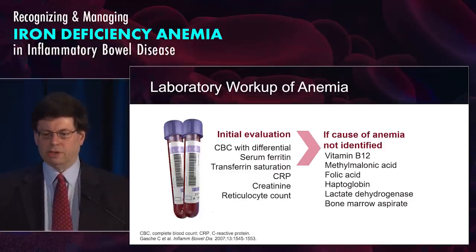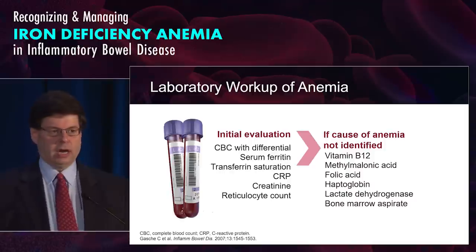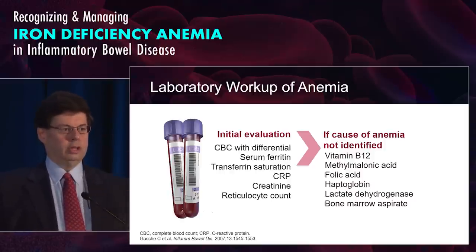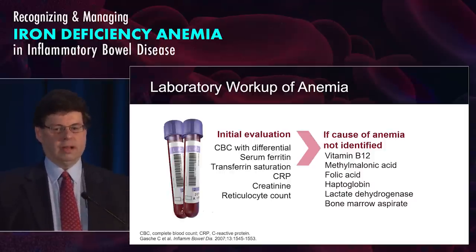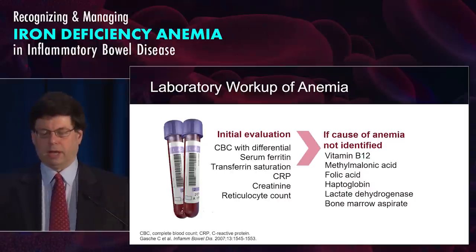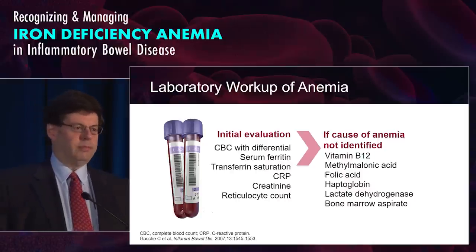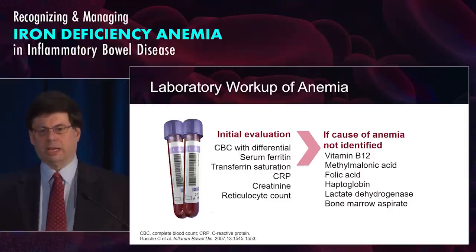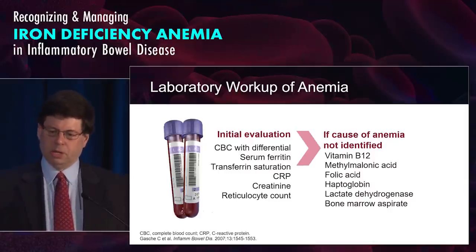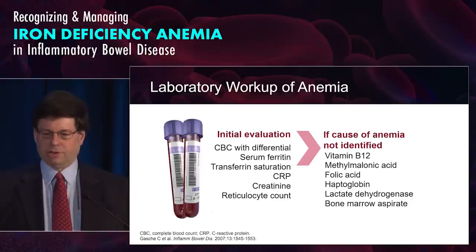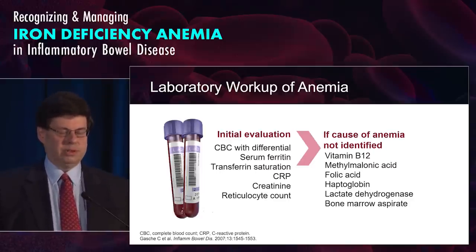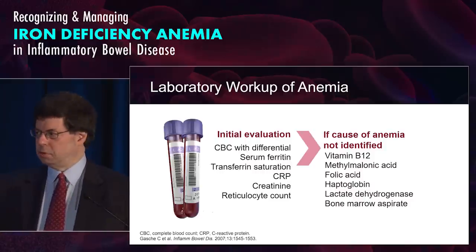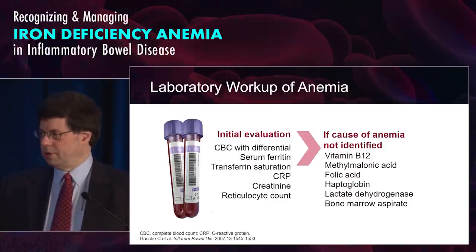Secondary studies include B12, spot methylmalonic acid — a high level correlates with low B12 body stores — folic acid (remember it's not the serum folic acid but the red cell folate, which corresponds with your six-week folic acid levels), haptoglobin for hemolysis, LDH similarly, and when needed, a bone marrow aspirate to see if the patient has myelodysplastic syndrome or other disorder.